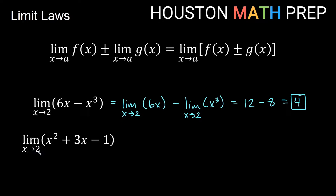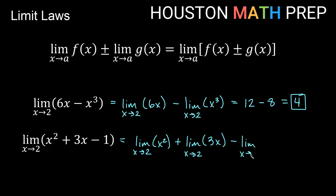For the second example: the limit as x approaches 2 of x squared plus 3x minus 1. That's going to be the same as the limit of x squared, plus the limit of 3x, minus the limit of 1, all as x approaches 2. There's no divide by zeros, no undefined, no strange infinite behavior. Plugging in: x squared gives 4, 3x gives 6, and the limit of the constant 1 is just 1. So 4 plus 6 minus 1 gives an overall limit of 9.